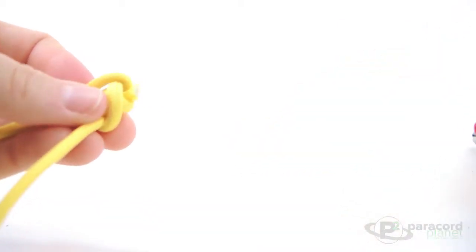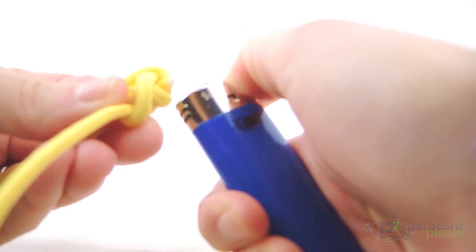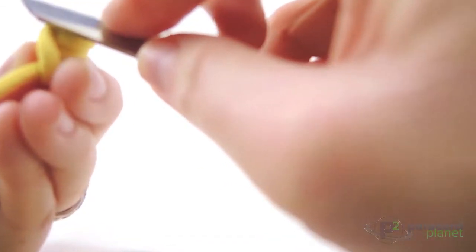So again you will just take this leftover piece after the knot, snip it, singe it off, and flatten it with your scissors.